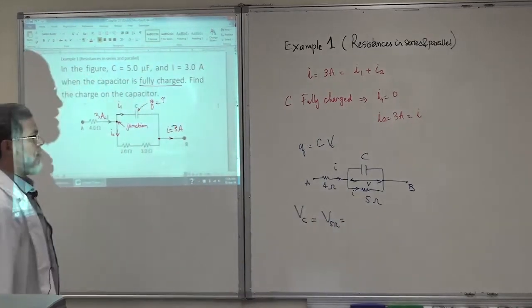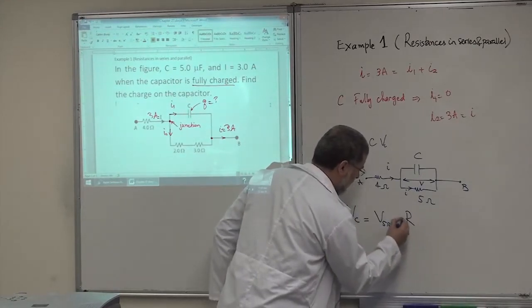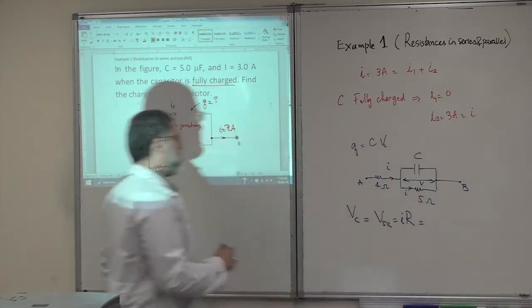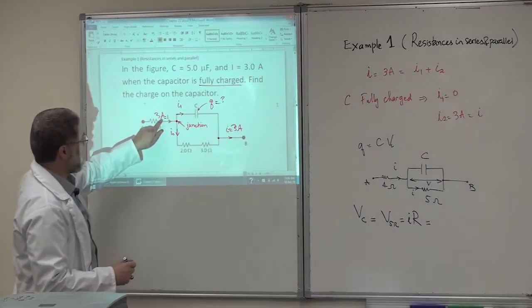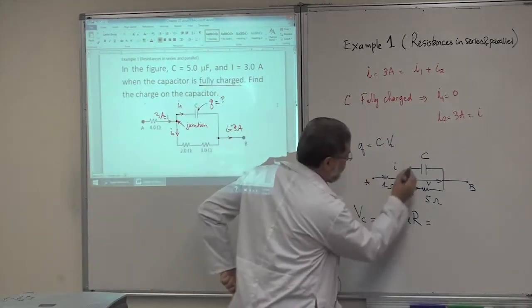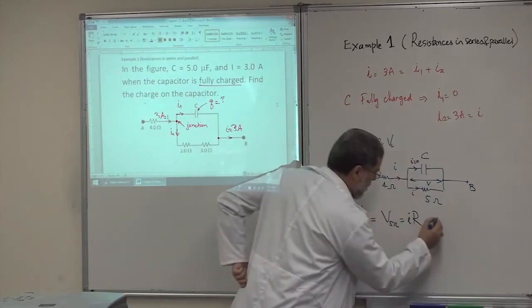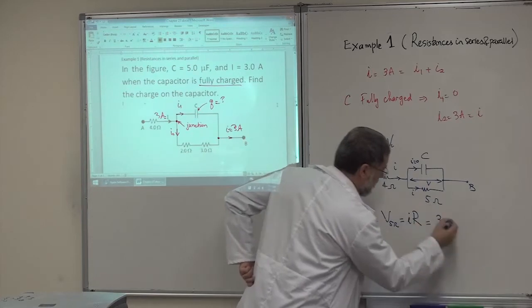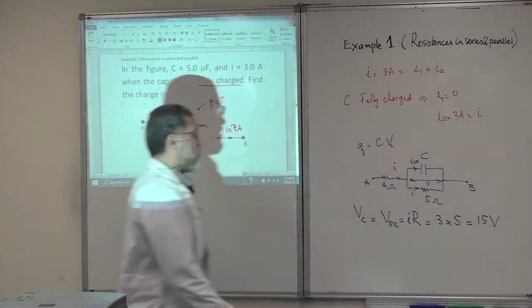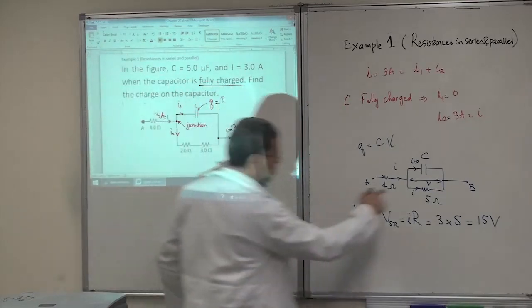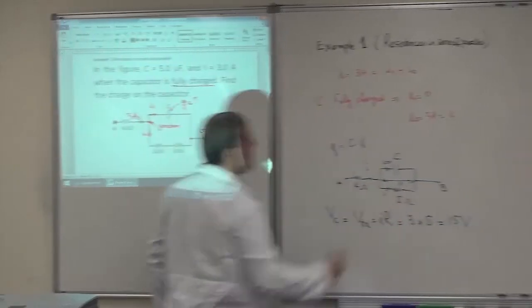The potential across the capacitor equals the potential across the five-ohm resistor: V = R × I. The current going through these two resistors is three amperes, since I1 is zero when the capacitor is fully charged. So it's 3 times 5, giving 15 volts — that's the potential difference across the capacitor and the parallel resistors.